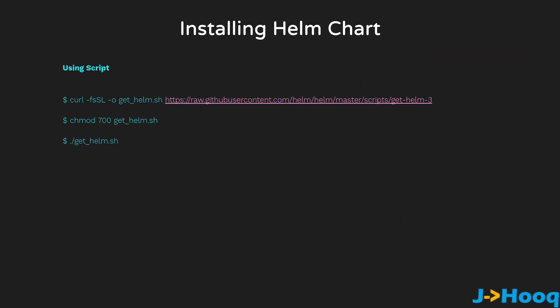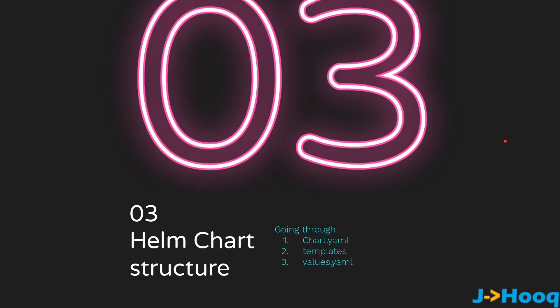If you don't like the binary option either, there is a third option — via script. You can just run the script and get your Helm installation done on your local machine or Kubernetes cluster. Moving to Part 3, we are going to see the Helm Chart structure, which is basically divided into three components: chart.yml, templates, and values.yml.